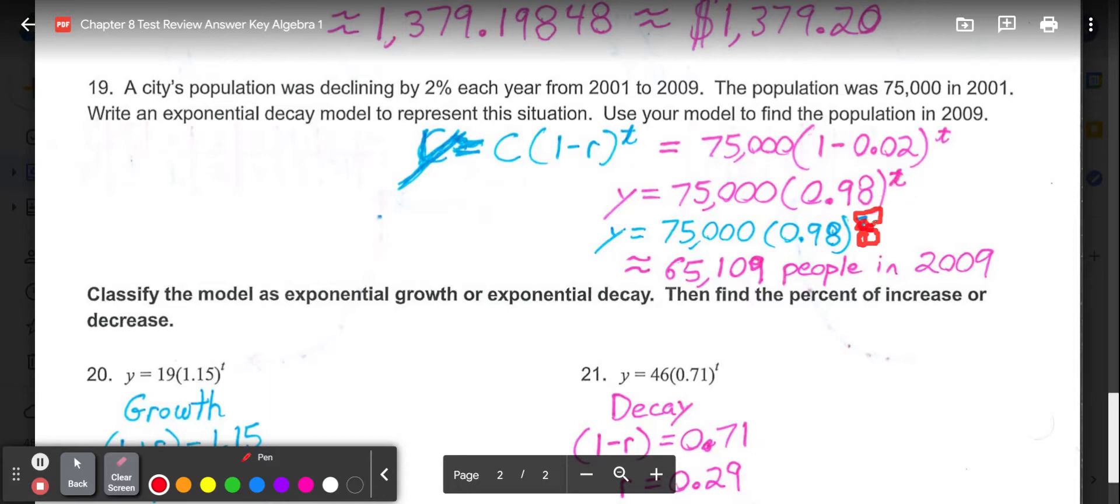So when we put that into our calculator, our answer is going to be 0.98 raised to the 8th power, and then you'd multiply that by 75,000. So we should get a population of approximately 63,807 people. Terrible writing there with the online pen. But it would not be this answer, because that would only be 7 years of time, which would have been 2008. So make sure you change that one.